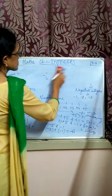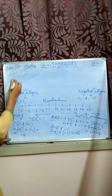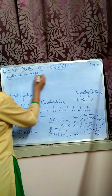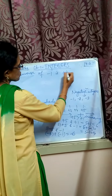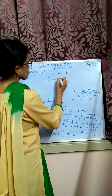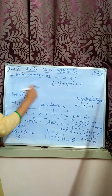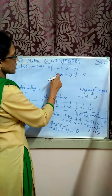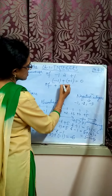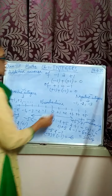Next, we deal with additive inverse. The additive inverse of a negative or positive number is the number that when added gives 0. Additive inverse of minus 1 is plus 1, because minus 1 plus plus 1 is 0. Similarly, additive inverse of plus 1 is minus 1, because plus 1 adding with minus 1 becomes 0.